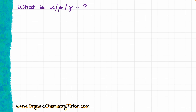Before we go any further, I want to quickly go through the alpha, beta, gamma nomenclature, just so we're on the same page. Whenever we have a functional group connected to a chain of carbons, the very first carbon connected to that functional group is going to be the alpha carbon. The next carbon is going to be the beta carbon, then we have gamma, delta, epsilon, and so on for as long as the chain continues.